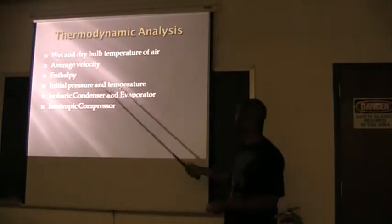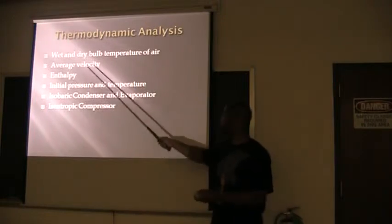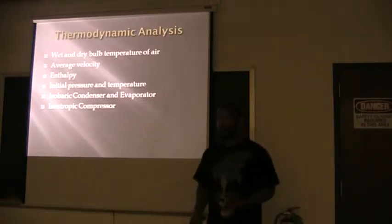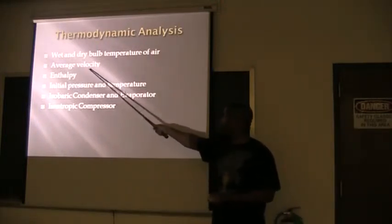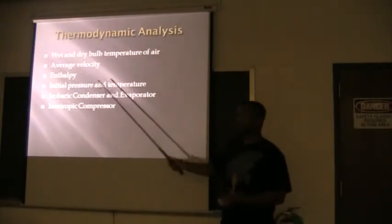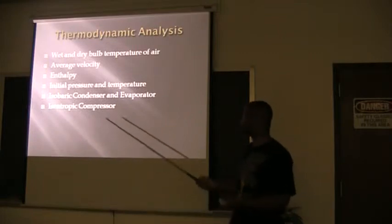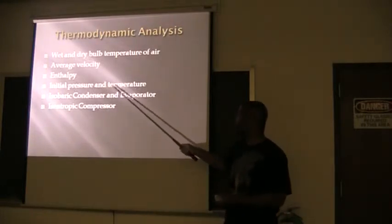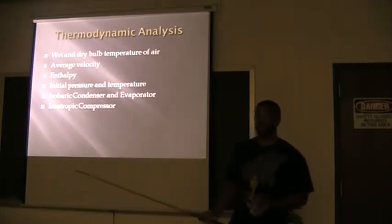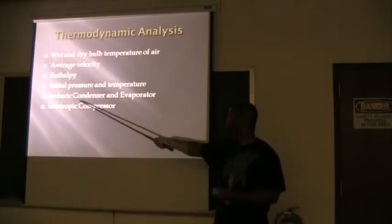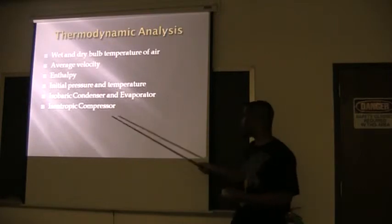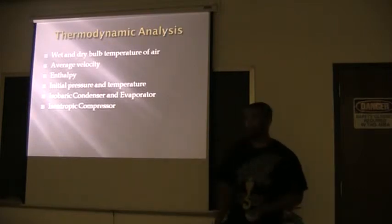And basically the thermodynamic analysis is going to make use of the wet and dry bulb temperature of the air in order to calculate the enthalpy, the velocity in order to calculate the mass flow rate, and both initial and exit pressure and temperature exiting around the control volume of the evaporator. And our basic assumption is going to be constant pressure condenser and evaporator as well as an isentropic compressor.